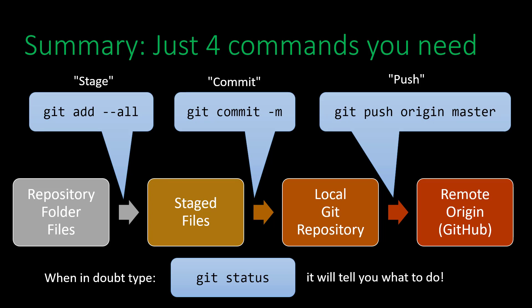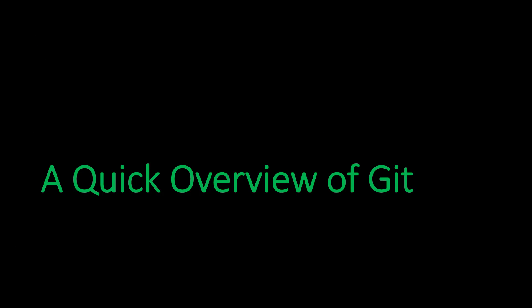So in summary, there are just four simple commands you need to use in this very basic Git workflow, and it's a good workflow to start. You can learn a lot more about Git as you master these four commands. First, when you don't know what to do, type git status — it will tell you what to do. If you need to stage files, type git add --all. If you have staged files and need to commit them, type git commit -m and include a commit message. Finally, to reconcile your local git repository with the remote repository on GitHub, use git push origin master. This concludes our quick overview of Git. Hopefully this will be enough to get you started. Thanks and bye!